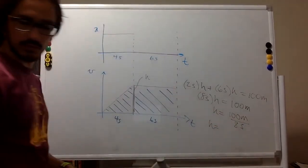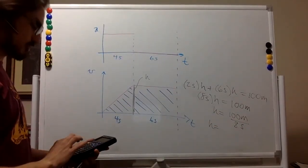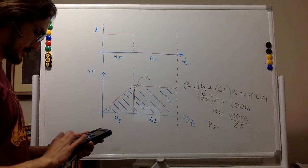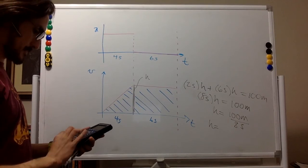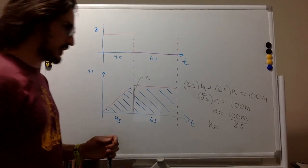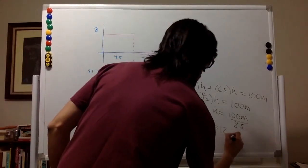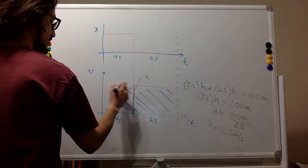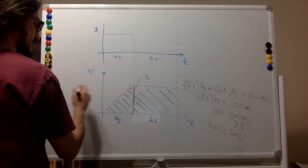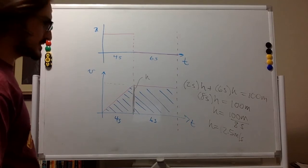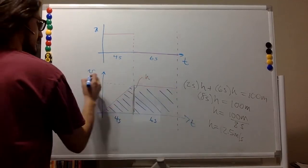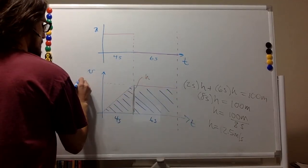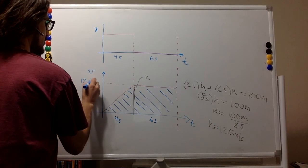And so that gives you a height of 12.5, right? 12.5 meters per second. Okay, so the final velocity is 12.5 meters per second.